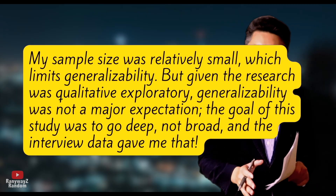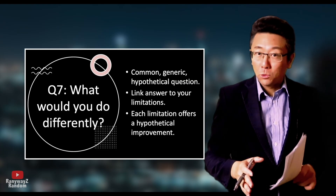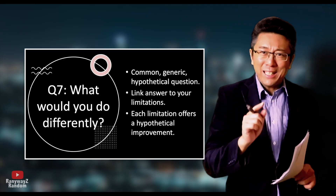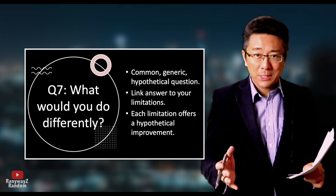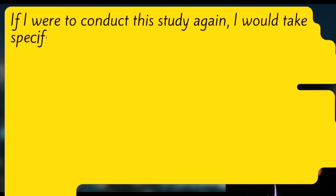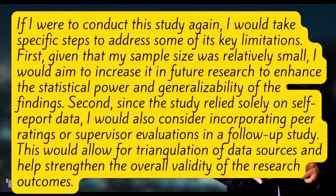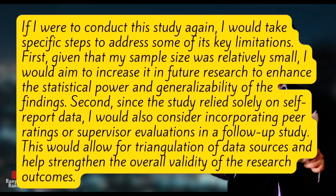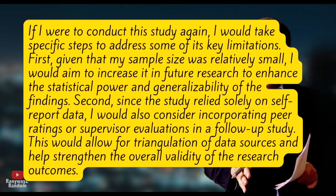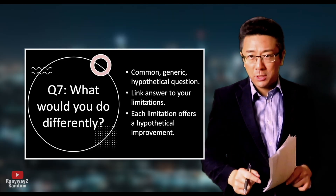Question number seven: what would you do differently if you could start over again? This is a common hypothetical question that works on every thesis and every student, so professors love asking it. The best and easiest way to answer is to relate back to your limitations. If a limitation was a small sample size, you would enlarge it. If a limitation was relying only on self-report data, you could say next time you would include peer or supervisor ratings to further boost validity. For every potential limitation, you have a hypothetical improvement strategy.